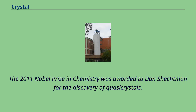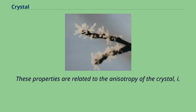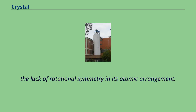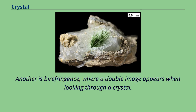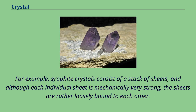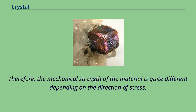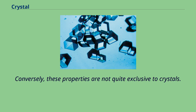Crystals can have certain special electrical, optical, and mechanical properties that glass and polycrystals normally cannot. These properties are related to the anisotropy of the crystal — i.e., the lack of rotational symmetry in its atomic arrangement. One such property is the piezoelectric effect, where a voltage across the crystal can shrink or stretch it. Another is birefringence, where a double image appears when looking through a crystal. Moreover, various properties of a crystal, including electrical conductivity, electrical permittivity, and Young's modulus, may be different in different directions. For example, graphite crystals consist of a stack of sheets — each individual sheet is mechanically very strong, but the sheets are rather loosely bound to each other, so mechanical strength differs greatly depending on the direction of stress. Not all crystals have all of these properties, and conversely, these properties are not quite exclusive to crystals — they can appear in glasses or polycrystals that have been made anisotropic by working or stress, for example, stress-induced birefringence.